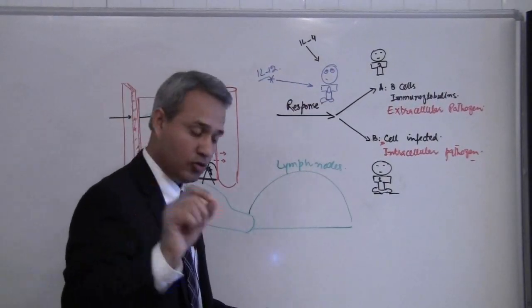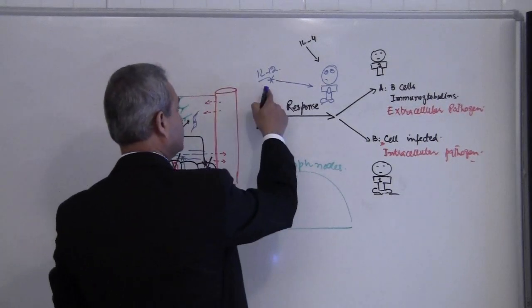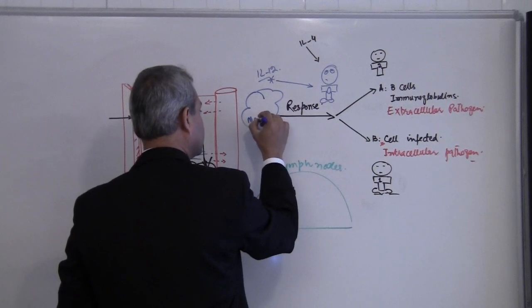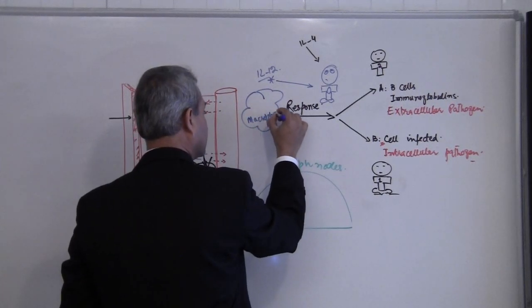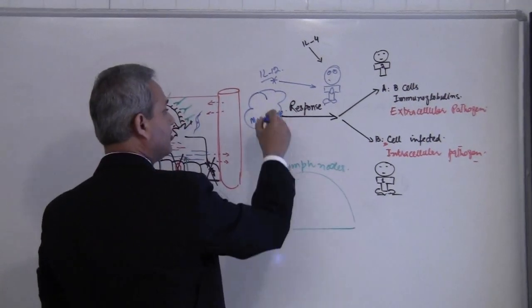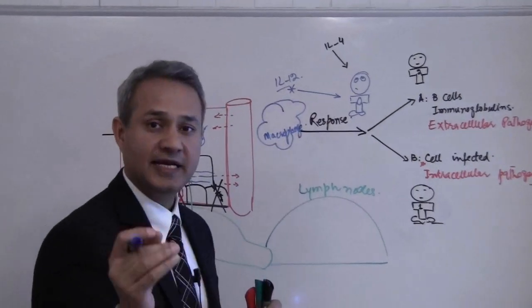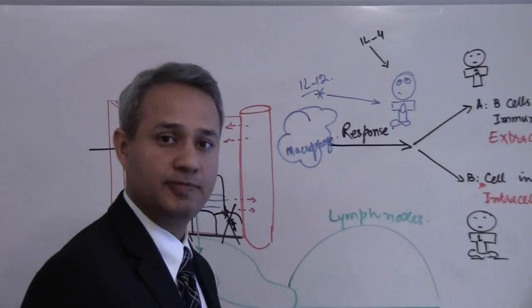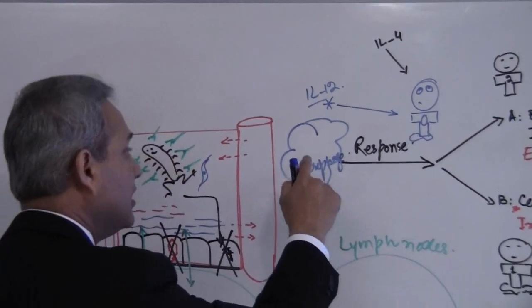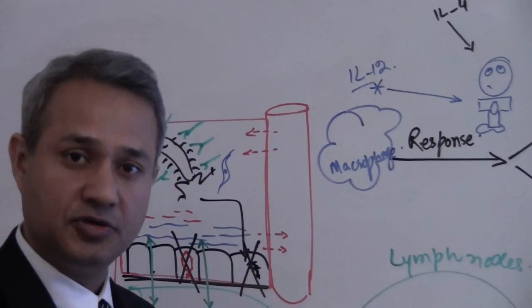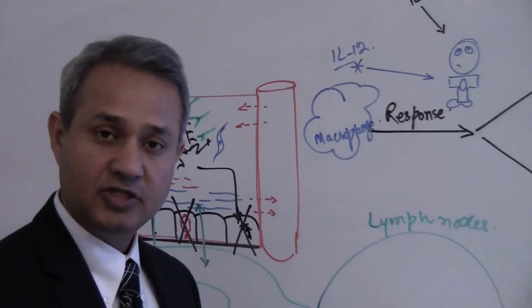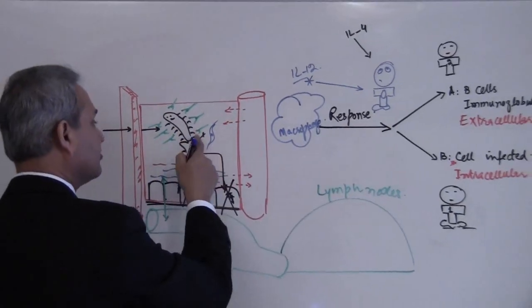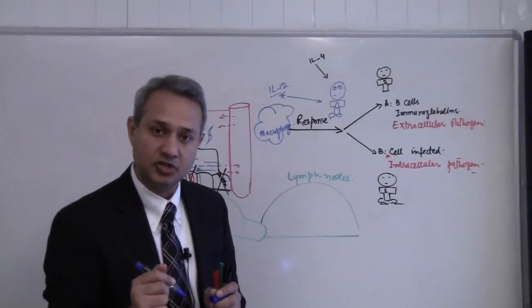Now we know that the message IL-12 usually comes from the macrophage. It comes from a macrophage when it engulfs bacteria. Which kind of pathogens would it engulf? It will engulf the pathogens which are sitting in extracellular tissue. Macrophage's function is to do phagocytosis, so phagocytosis can be done for pathogens sitting in extracellular tissue.